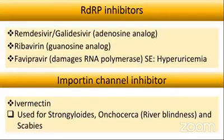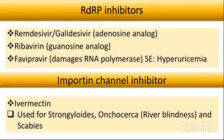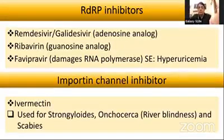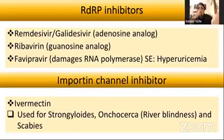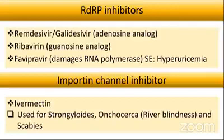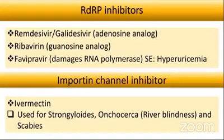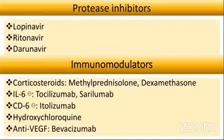Importin, which allows the virus to hijack our nucleus, can also be blocked. The drug that blocks importin is ivermectin — already used for parasites like Strongyloides, Onchocerca (causing river blindness), and scabies. It is now a popular drug in COVID treatment in India, often used in combination with doxycycline.